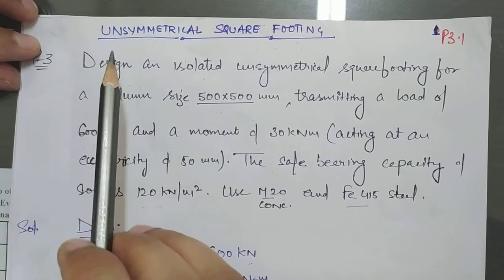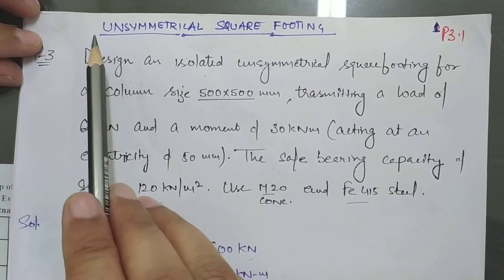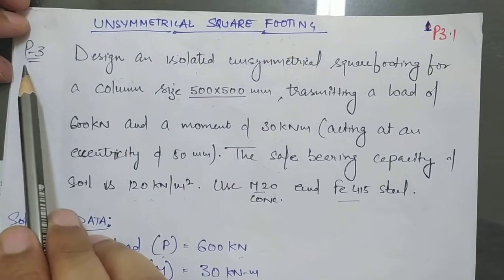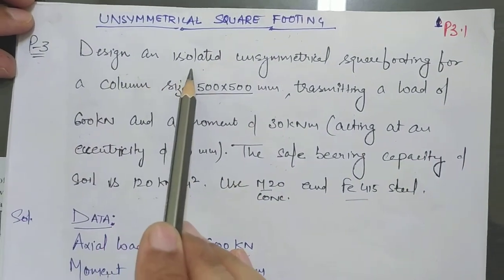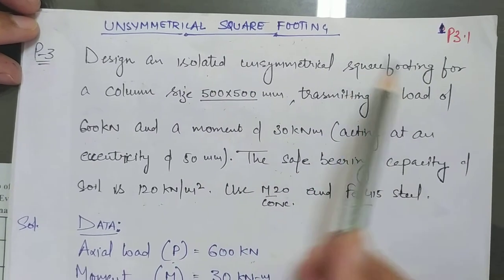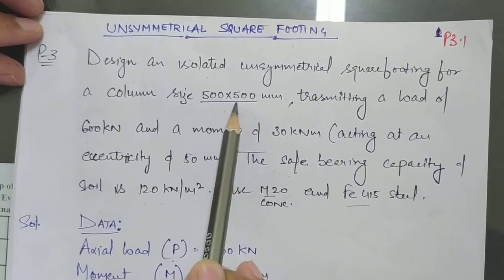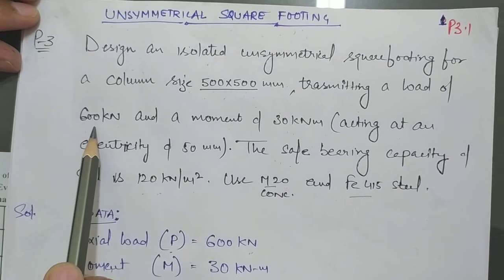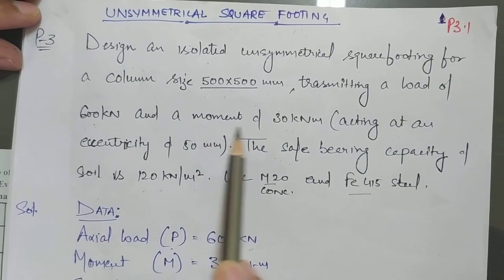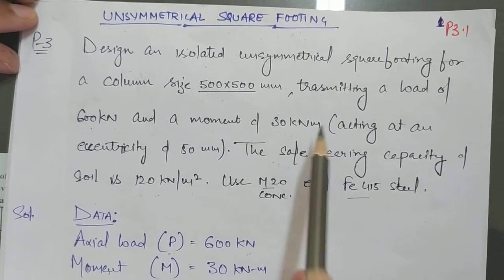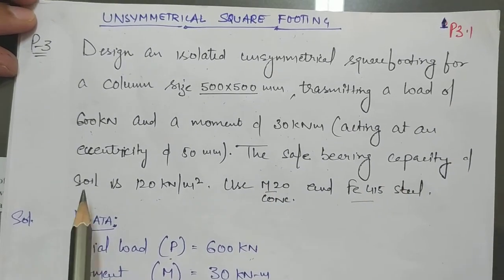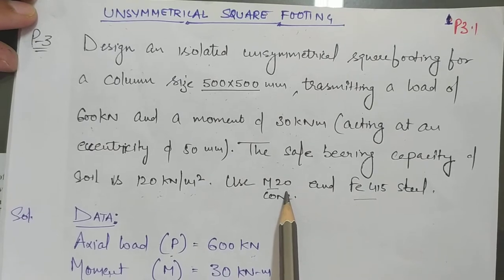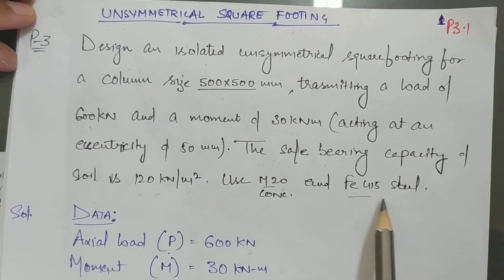Hello everyone. This numerical is regarding the design of an unsymmetrical square footing. The statement is: design an isolated unsymmetrical square footing for a column size 500×500 mm transmitting an external load of 600 kilo Newton and a moment of 30 kilo Newton meter. The safe bearing capacity of the soil is 120 kilo Newton per square meter. Use M20 concrete and Fe415 steel.